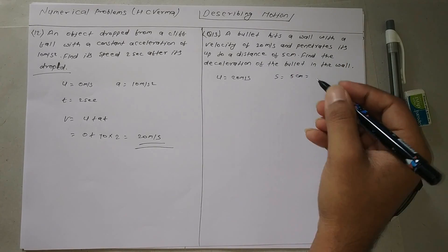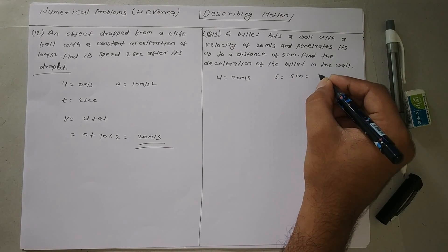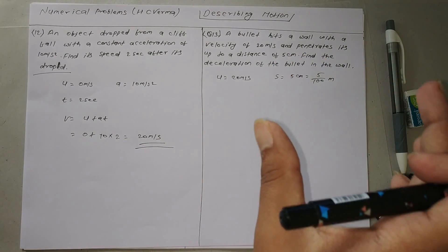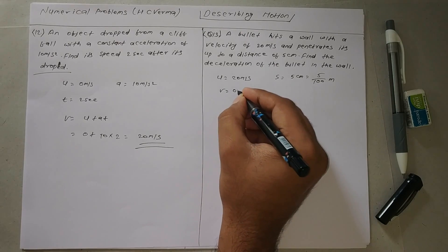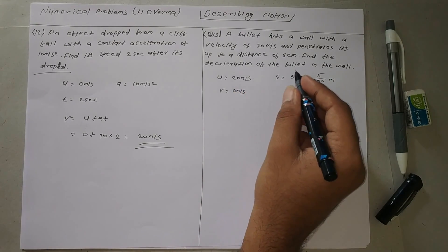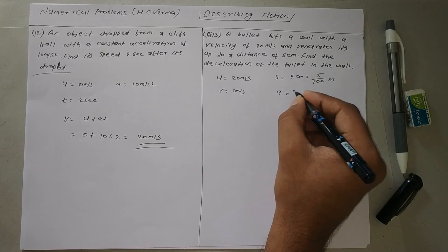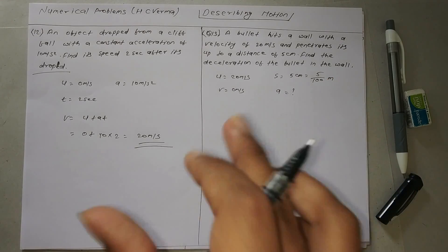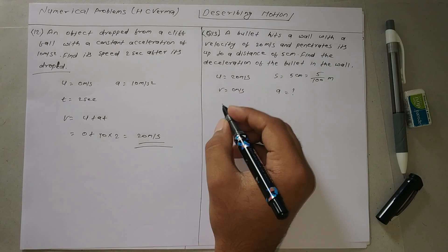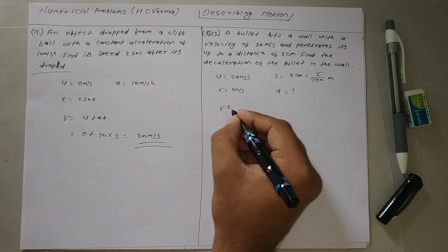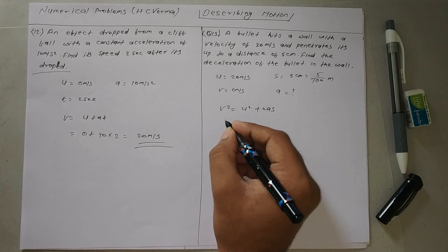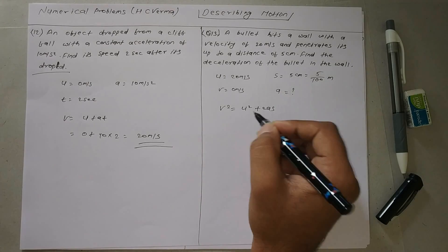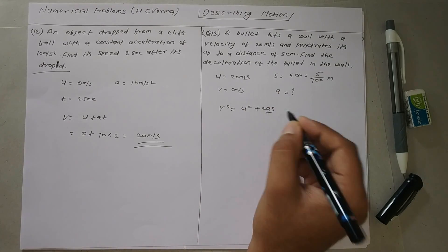We convert 5 cm into meters: 5 by 100 meters. Since the bullet penetrates up to 5 cm and then stops, v is 0 meters per second. We need to find deceleration, meaning acceleration a. Always remember the three equations of motion. Here we can apply v squared equals u squared plus 2as, since we know v, u, and s, but not a.